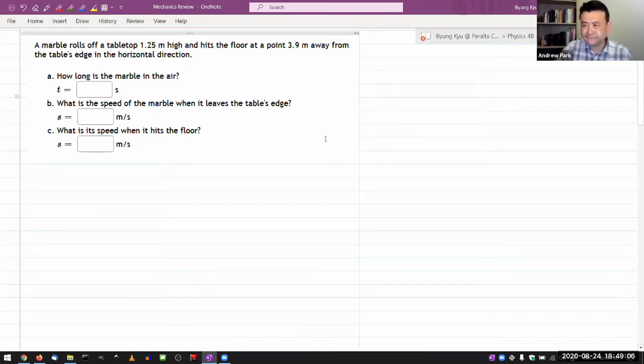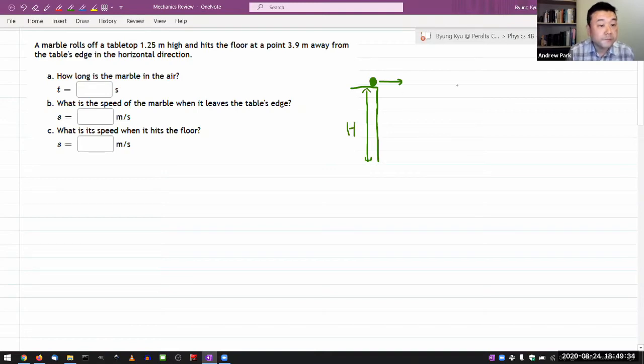Unless there are other requests. Didn't see any other requests. Okay. So let me do this. So it says a marble rolls off a tabletop, rolls off a tabletop, 1.25 meter high. I like to draw kind of figures as I try to figure out what information the question is giving me. So that's what I'm drawing. Marble is rolling off a tabletop of a certain height. And I guess it's going to kind of go through like a projectile motion thing. And it'll hit and hit the floor at a point 3.9 meters away or distance D away from the table's edge in a horizontal direction.